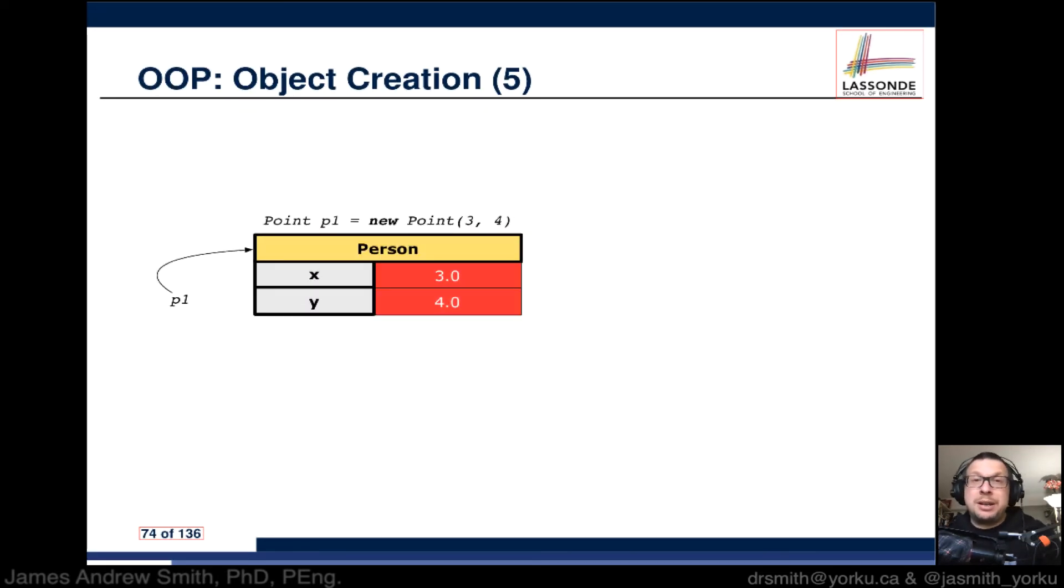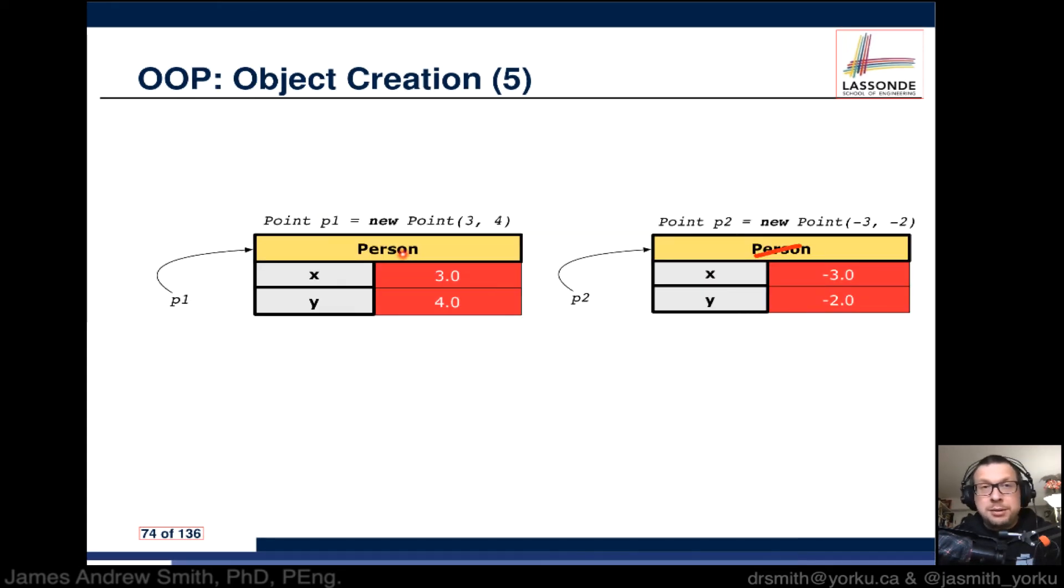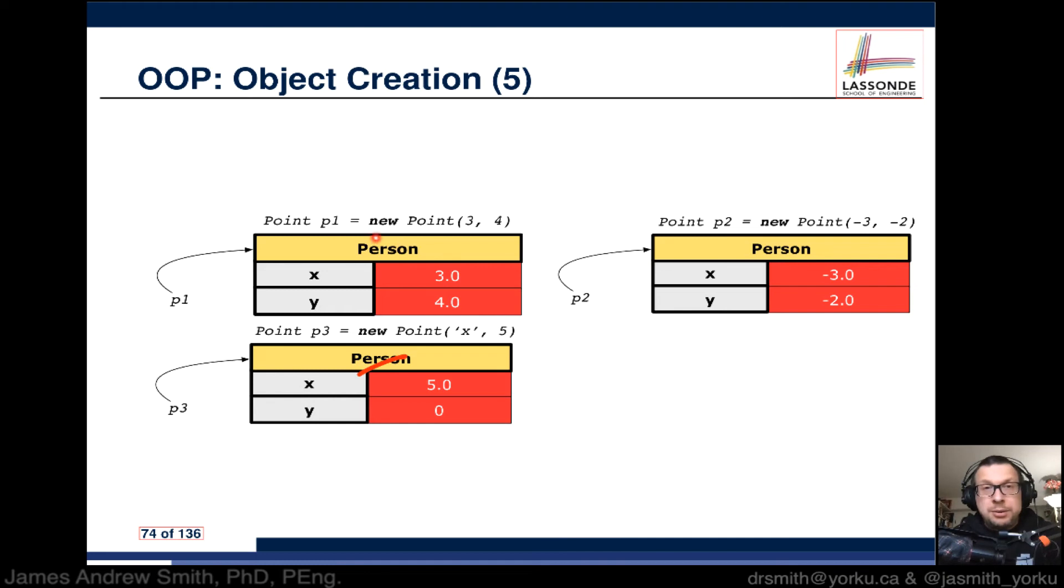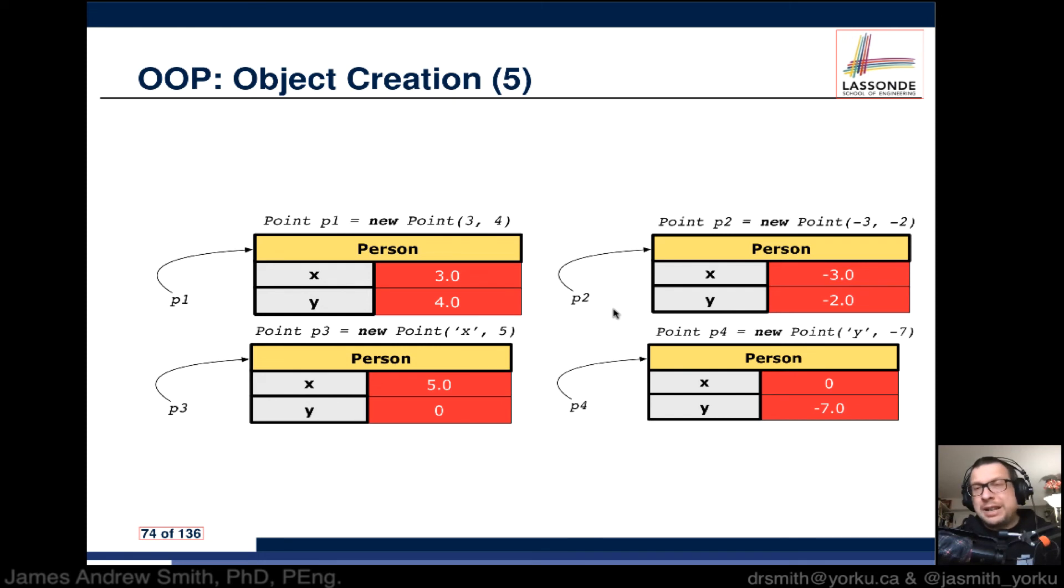Here's how it sort of looks when we visualize it. We have an object p1—that should have been of type Point, not Person—x is set to 3, y to 4. P2 is negative 3 and negative 2 at initialization stage. For Point p3, we are initializing x to 5 but we're not saying anything about y, so y gets set to 0, its default. And p4, again this is type Point, and x is going to be set to 0 because we're not specifying it, so it goes to its default, and y gets set to negative 7.